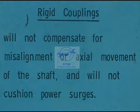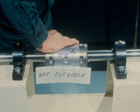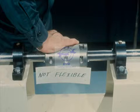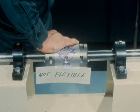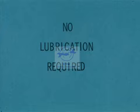Because of the solid connection of a rigid coupling, it does not offer very many advantages. It will not compensate for misalignment of the shafts or for axial movement of the shaft, and it will not cushion power surges or shock. The one advantage of the two rigid couplings is that neither of them require lubrication, since there are no moving parts to create friction.